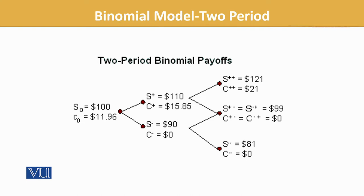The lower path at $90 can either go up to $99 or fall to $81. As we discussed, if the percentage is the same, going up then down or down then up reaches the same point.